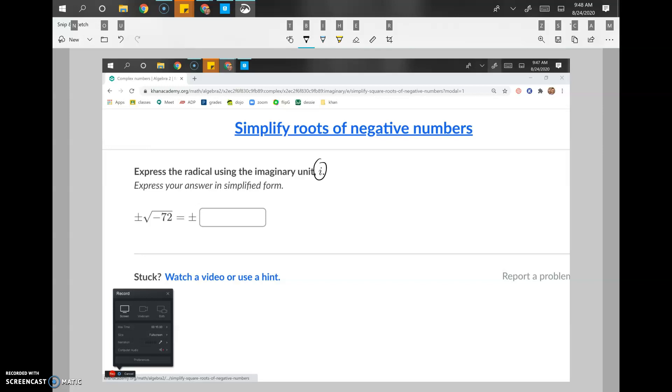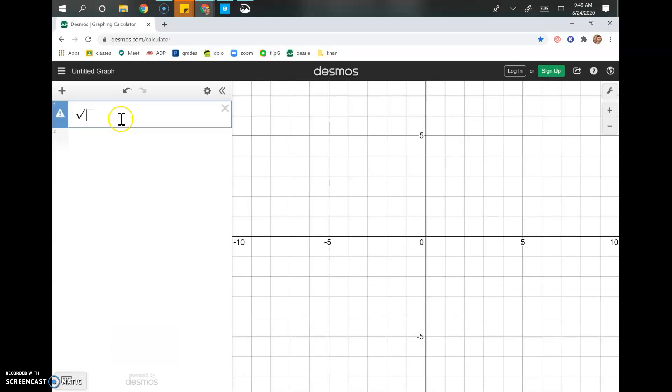The reason why we have them is because you can't take the square root of a negative number. It's really important that you understand what it means to take the square root of a number. So when we take the square root of 16, we're trying to find what number times itself gives us that number. So 4 times itself gives us 16.